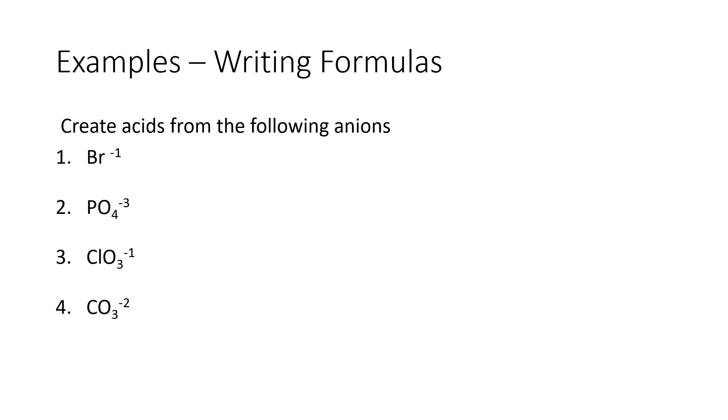As an example, let's work on creating acids from these anions. So this first anion is bromide. We use the IDE ending when there are no oxygens present. To turn this into an acid, the cation has to be H+, and then it pairs up with the bromide ion. Plus one and minus one cancel out. So cleaning that up, the final answer for this acid is HBr.